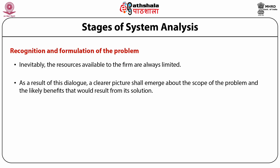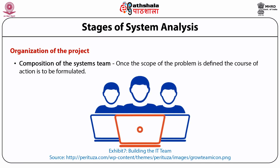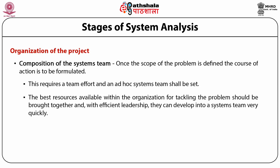The second stage is the organization of the project. The first step includes composition of the system team. Once the scope of the problem is defined, the course of action is to be formulated. This requires a team effort and an ad hoc system team shall be set up, ideally comprising developers within the organization and specialists who may anticipate various facets of the solution design.